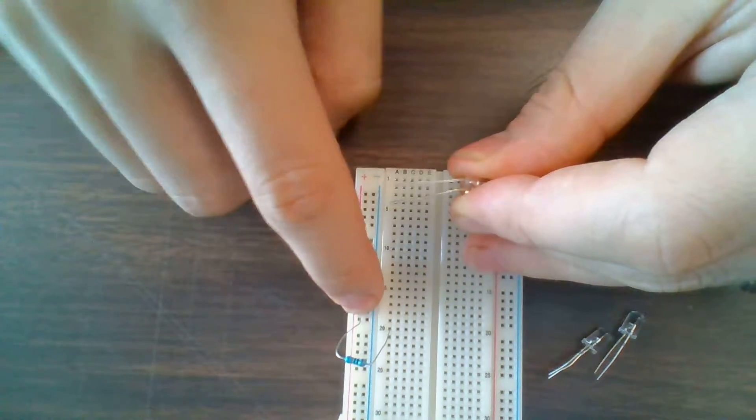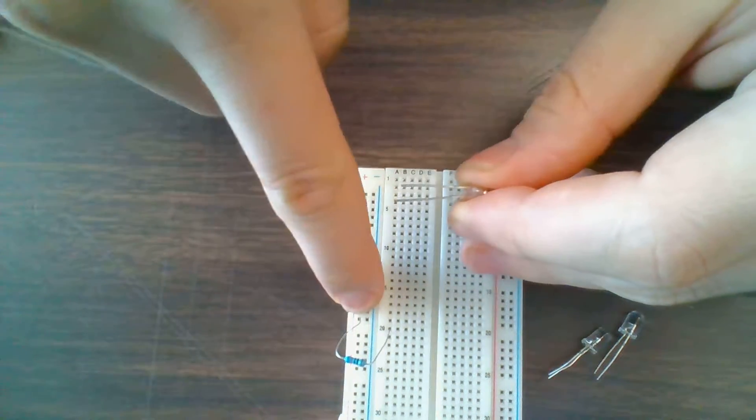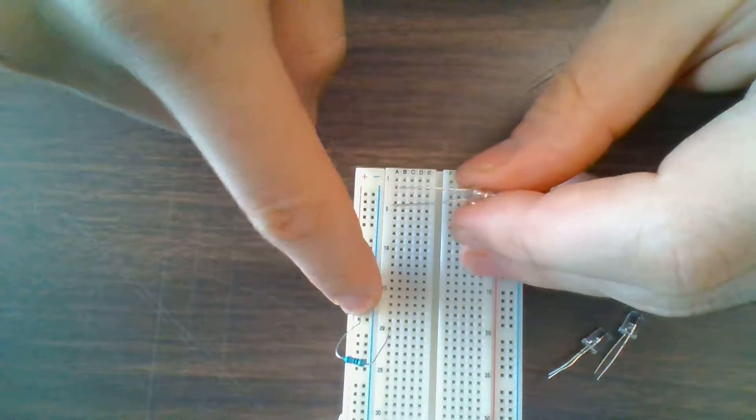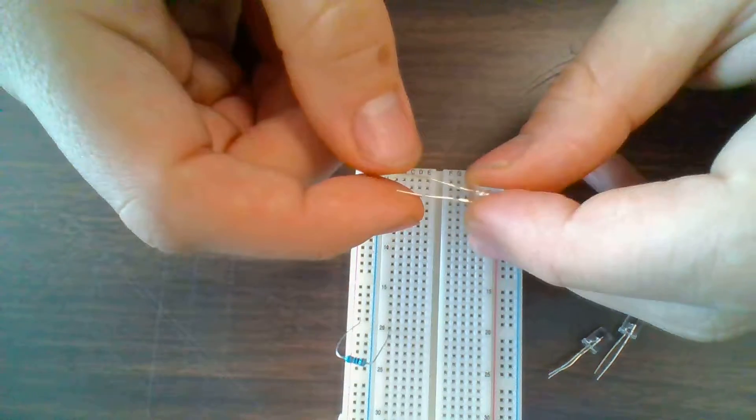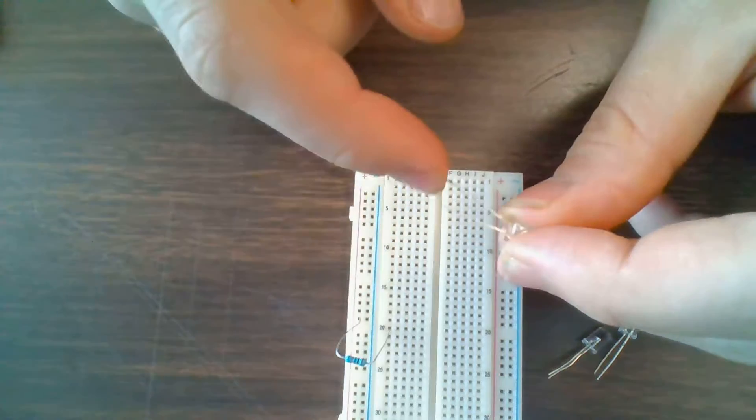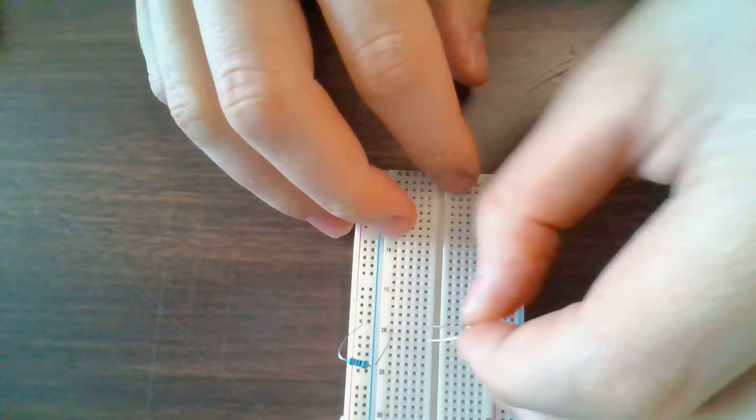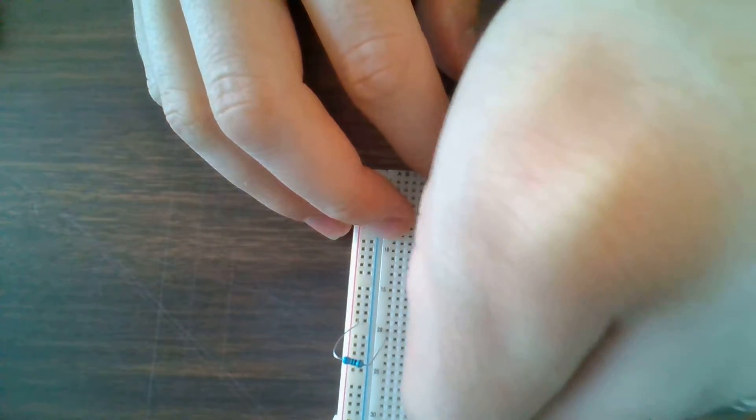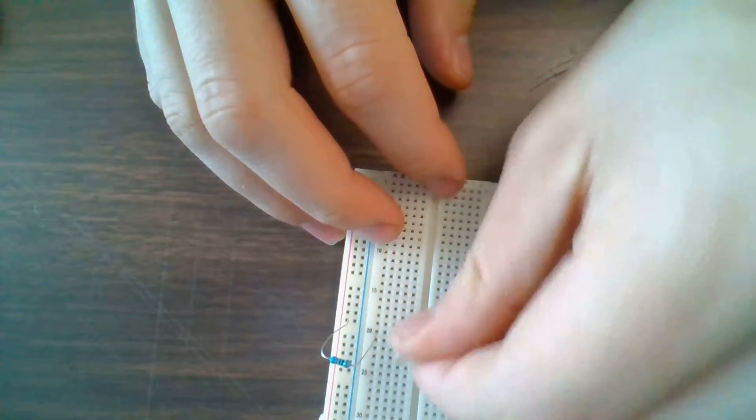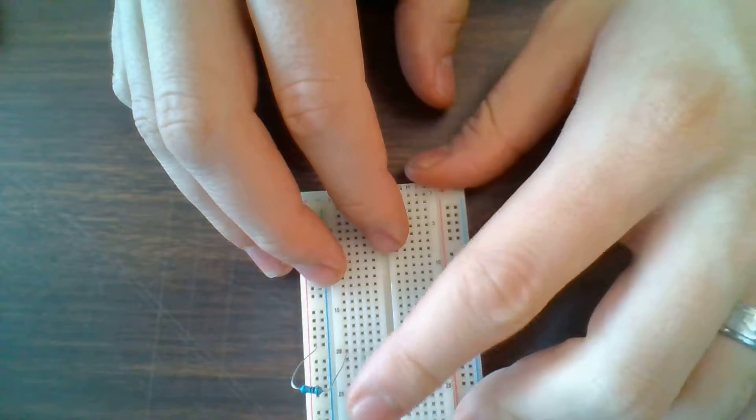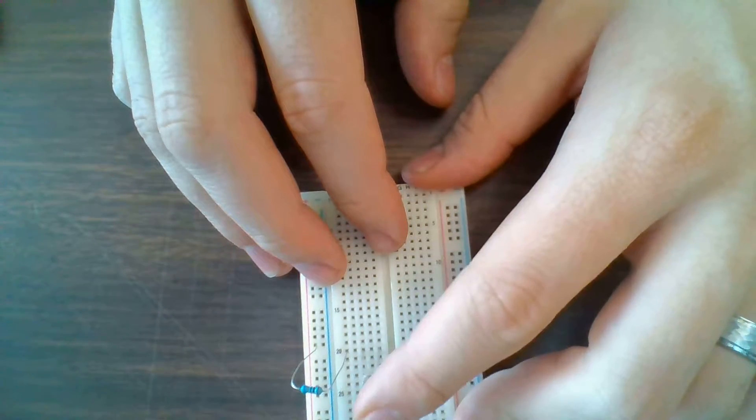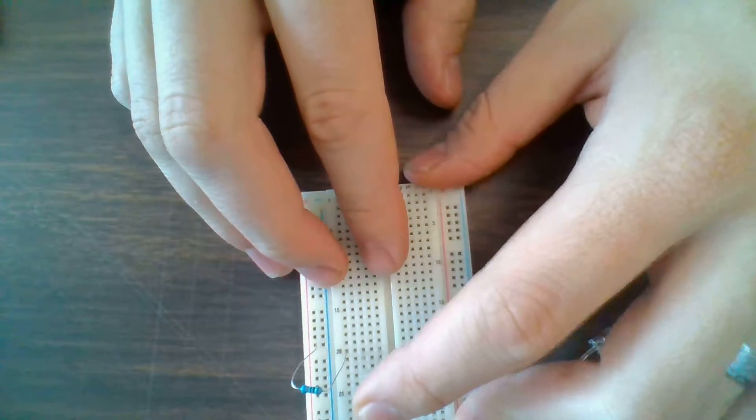Because I'm using an LED, I want to make sure that the positive end of the LED is connected to my resistor, because I have my resistor plugged into the positive part of the breadboard. Then I want to make sure that I don't plug the short end of the LED into the same row like this.